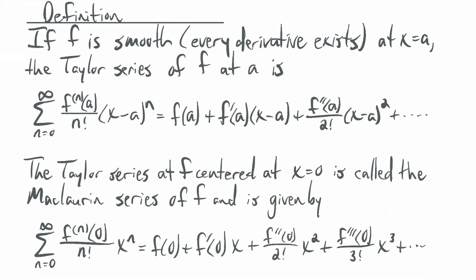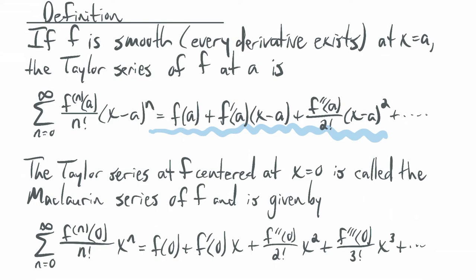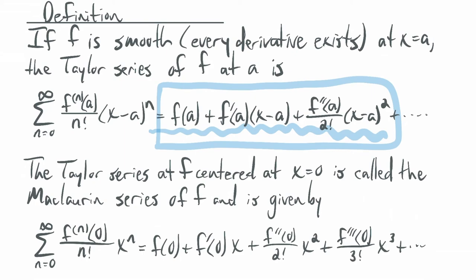The first term is f of a — just the function value. The second term is f prime of a times x minus a, which you might recognize as the linear approximation or tangent line. When you use just two terms, you're doing the linear approximation. Some books also talk about the quadratic approximation: the next term is f double prime of a over 2 factorial times x minus a squared. Adding another term gives a cubic approximation, and so forth.